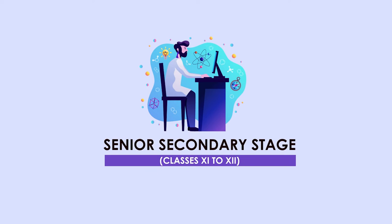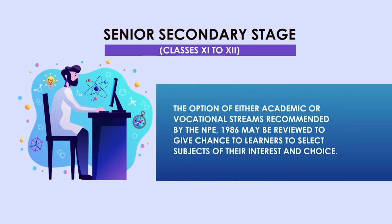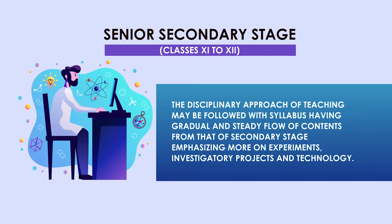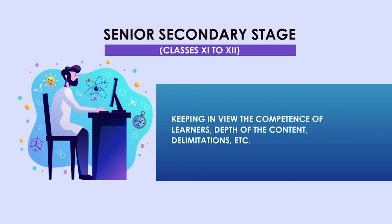At the senior secondary stage — that is for classes 11th and 12th — the curriculum of science should focus on the following aspects. The option of either academic or vocational streams recommended by the National Policy on Education 1986 needs to be reviewed to give learners the chance to select subjects of their interest and choice. The disciplinary approach of teaching must be followed with syllabus having gradual and steady flow of contents from the secondary stage, emphasizing more on experiments, investigatory projects, and technology. The syllabus should not be overloaded and should not focus only upon content.